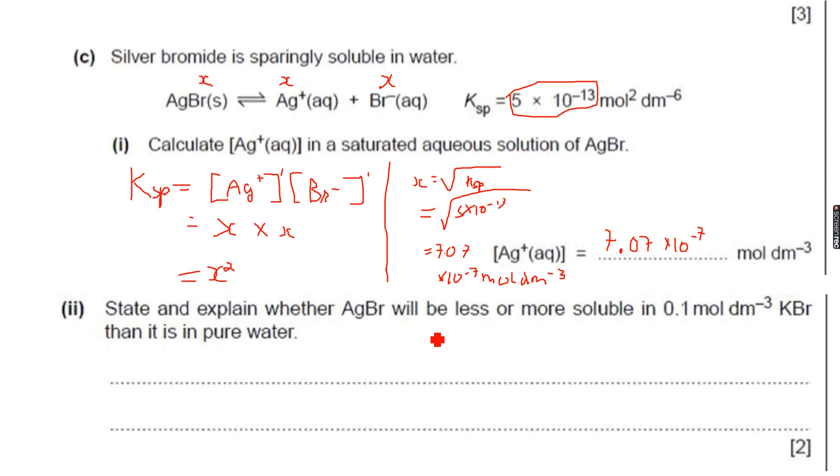Now it says, state and explain whether AgBr will be less or more soluble in 0.1 mole per dm cube KBr than it is in pure water. So now, of course, it will be less soluble in KBr because KBr dissolves completely.